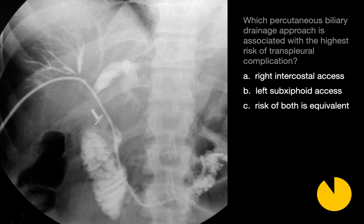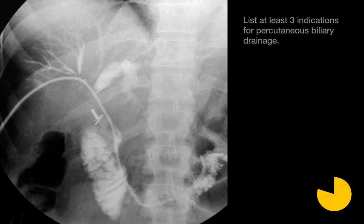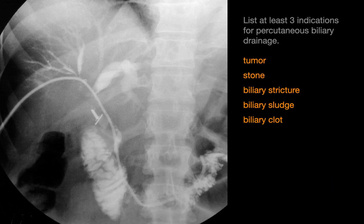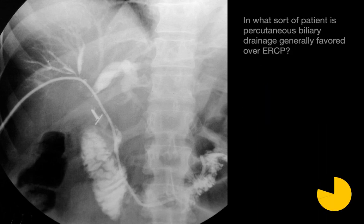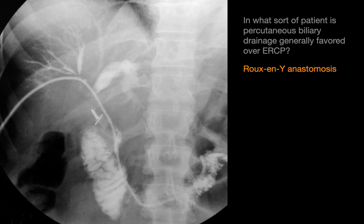Which percutaneous biliary drainage approach is associated with the highest risk of transpleural complication? The answer is D, a right intercostal access. Indications for percutaneous biliary drainage include tumor, stone, biliary stricture, sludge within the biliary duct, or biliary clot. Percutaneous biliary drainage is generally preferred over ERCP in patients with a Roux-en-Y anastomosis.